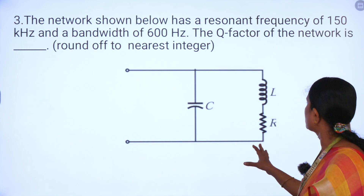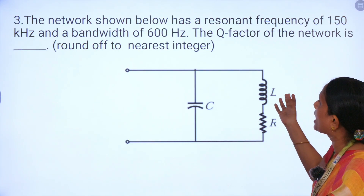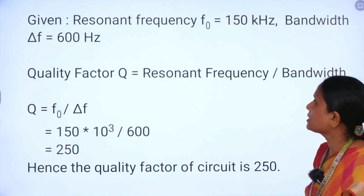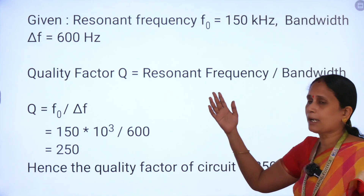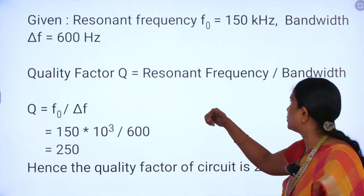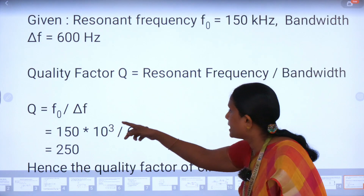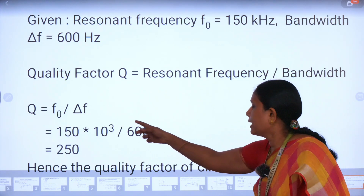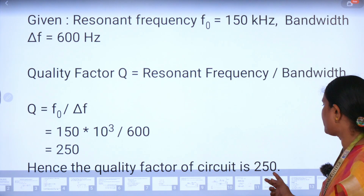Third problem: A network with R, L, and C has a resonant frequency of 150 kHz and a bandwidth Δf = 600 Hz. We have to calculate the quality factor, rounded to the nearest integer. Quality factor Q = F₀ / BW = (150 × 10³) / 600 = 250. Hence the quality factor of the circuit is 250.